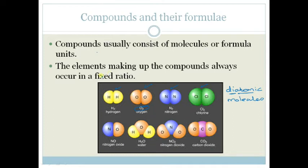The elements making up compounds always occur in a fixed ratio. For example, water is H2O, which means for every water molecule, there are two hydrogen atoms and one oxygen atom. Carbon dioxide is CO2, meaning two oxygens for every one carbon.